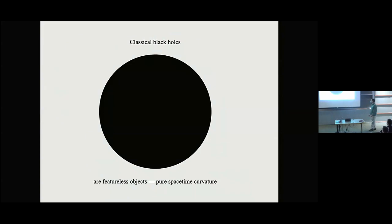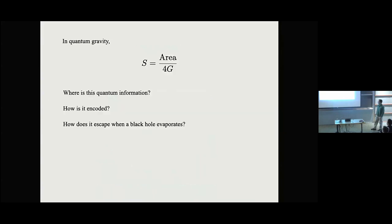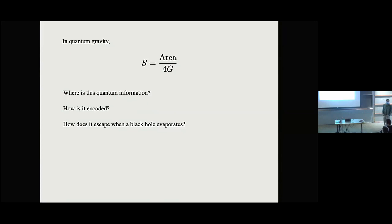Classical black holes are featureless objects — they're pure space-time curvature. In quantum gravity, we believe that black holes have an enormous entropy given by their area over four, measured in Planck units. So where is this quantum information, how is it encoded, and how does it escape when the black hole evaporates? These are all aspects of the black hole information problem. But since black holes are pure space-time curvature, these are really questions about space-time itself — what it's made of at the Planck scale and how to think about it in quantum gravity.